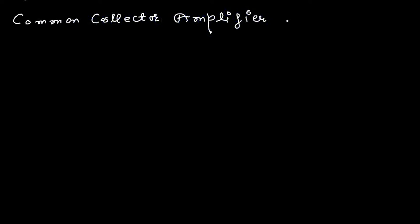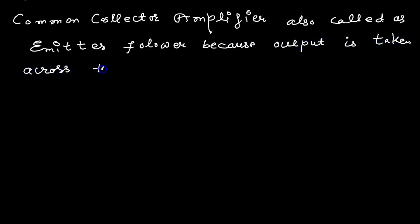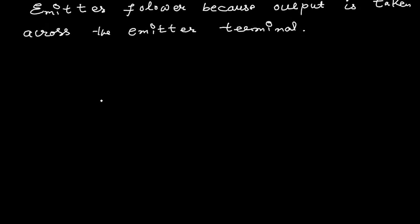The Common Collector Amplifier is also called the Emitter Follower. Do you know why it is called Emitter Follower? Because the output is taken at the Emitter terminal, not at the Collector as in the Common Emitter Amplifier. Here the output is taken at the Emitter terminal, so it is called Emitter Follower.